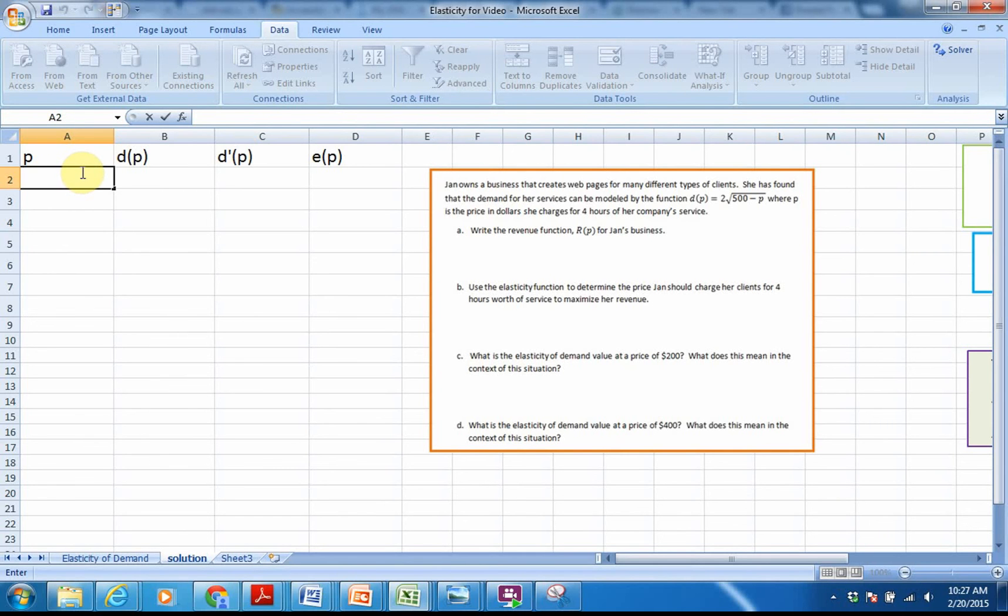One of the things that we want to do is, I have not given you any domain here, so we want to set up what we call a reasonable domain. When we're looking at elasticity functions because of the function itself, we don't want to use zero for price. But we can start off, say, a dollar is the lowest price that we're considering. And maybe you're just going to look at some reasonable prices for four hours worth of work.